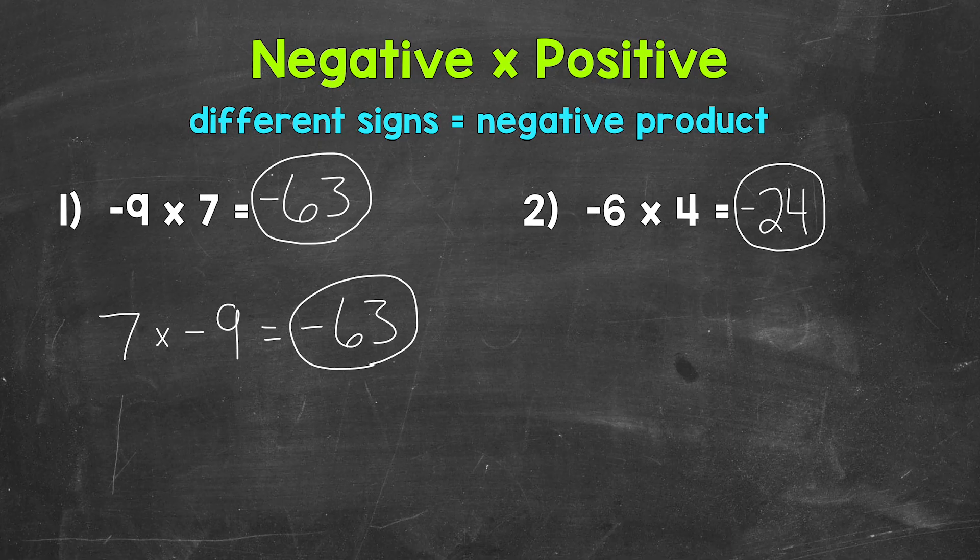Negative 6 times 4, we can think of that as negative 6 groups of 4. So we are taking away 6 groups of 4 and end up with negative 24.